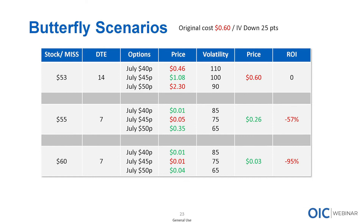On the downside scenario: if earnings are positive and the stock rallies up $2, volatility drops 25 points, and the butterfly collapses to just 26 cents — a 57% loss. At that point you could close the butterfly to salvage remaining value, or hold on if you expect the stock to reverse. If the stock moves to $60, the butterfly is worth only 3 cents and is essentially worthless, being $15 away from the initial $45 price target.